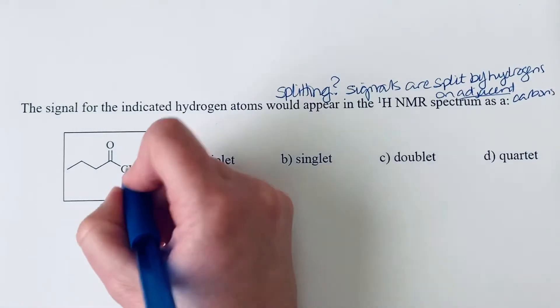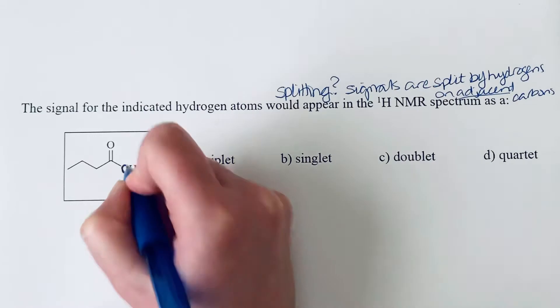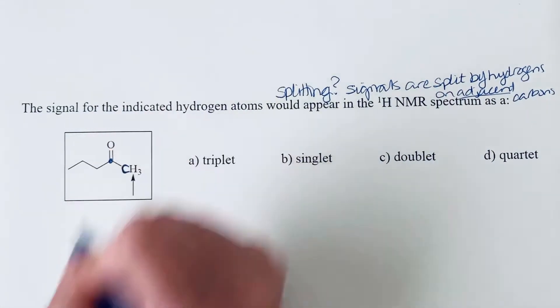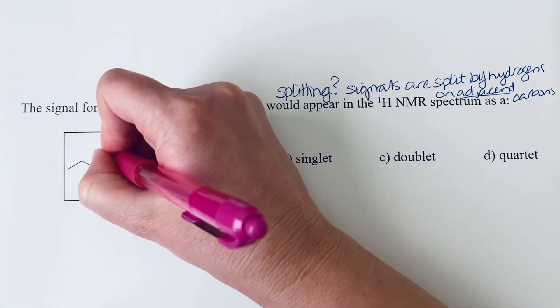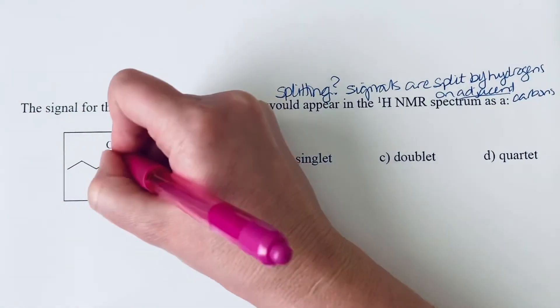So these three hydrogens here are attached to this carbon, so we would have to go to the adjacent carbon atom. And on this adjacent carbon atom, we just want to make sure there's no hydrogens that aren't implied and not shown.